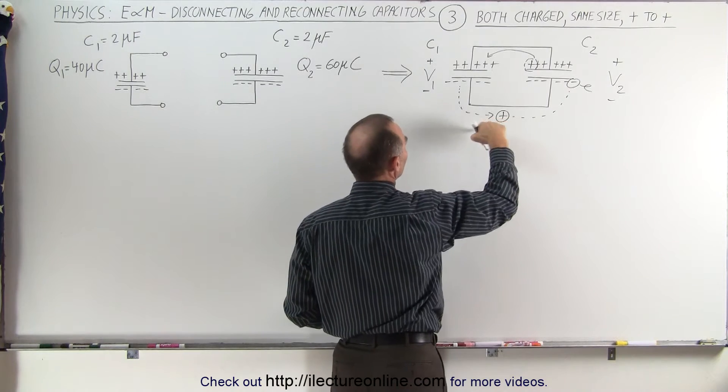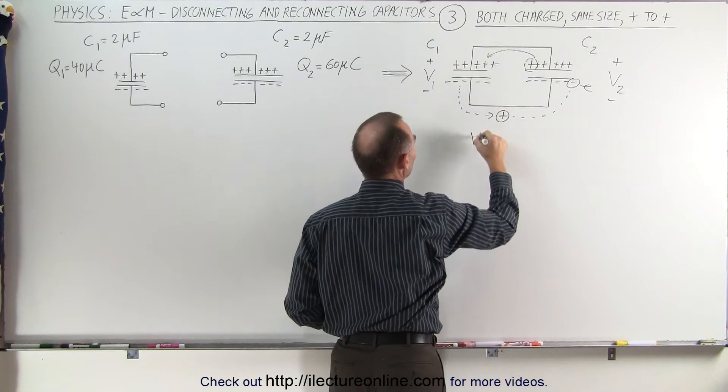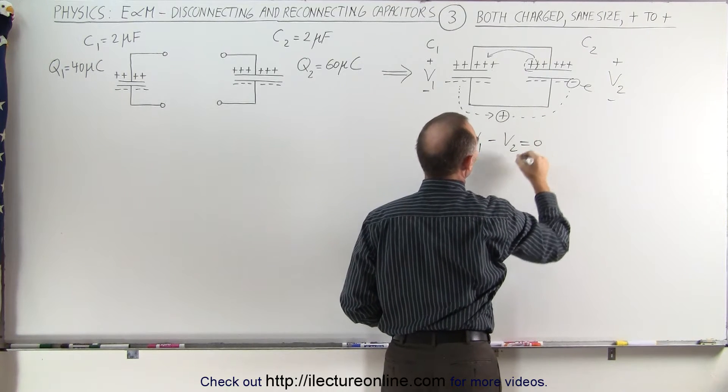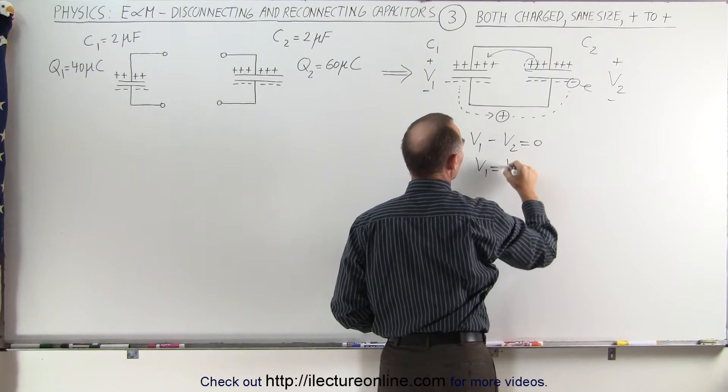We can say then that if we go around starting from here that plus V1 minus V2 equals 0, or V1 equals V2.